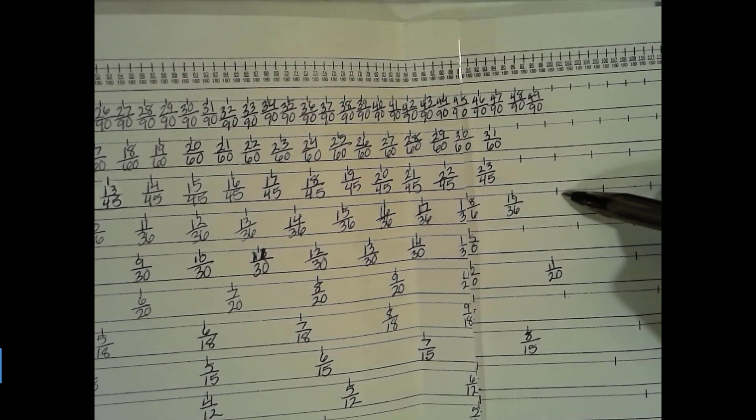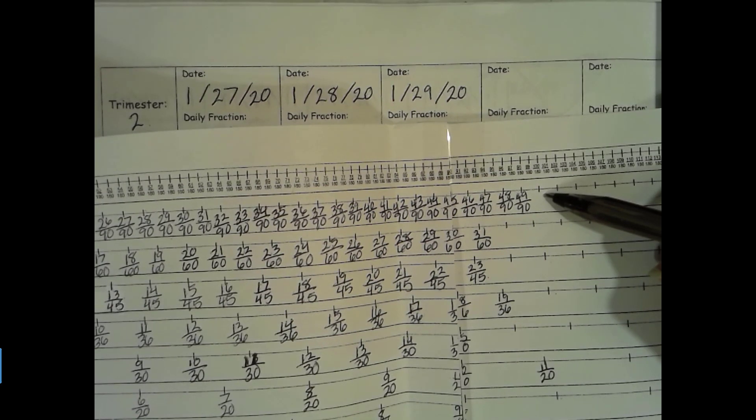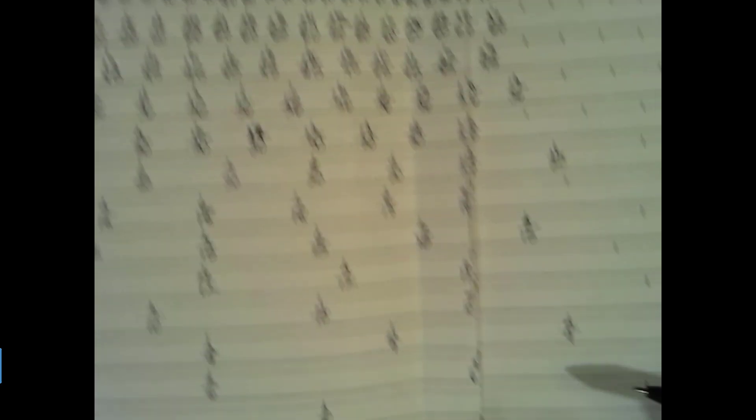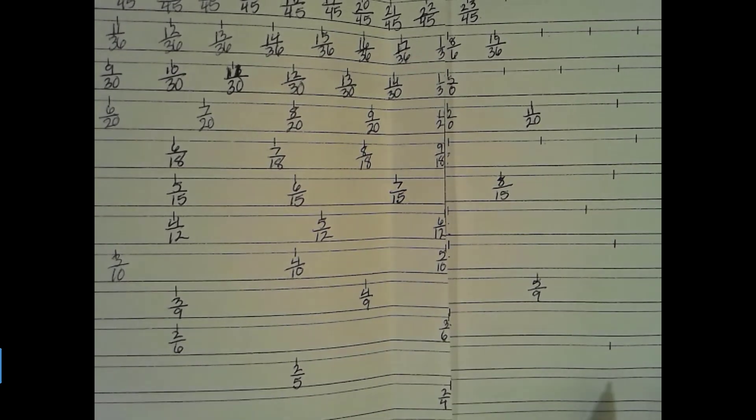We do have an equivalent fraction in the tenths, in the fives, in the fours, and in the twos. Because 2, 4, 5, and 10 are all common factors. The 20 was our greatest common factor and gave us our equivalent fraction in lowest terms or our simplest form.